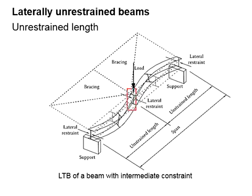When a beam is restrained at the intermediate span, the restraint point is resisted from torsional and lateral movement. However, the vertical displacement is allowed.